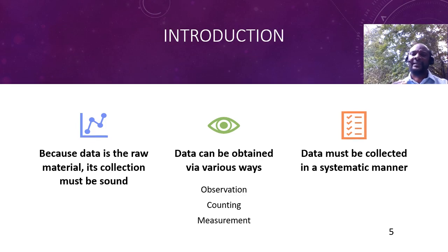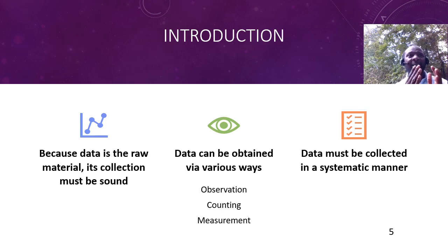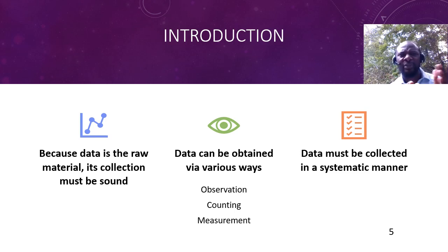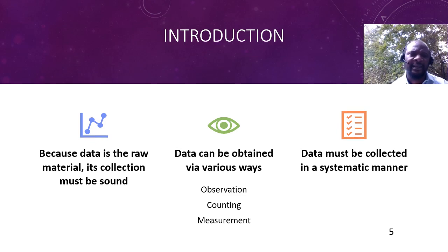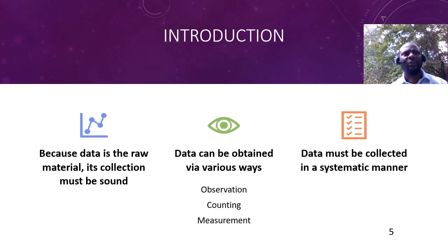Because this data will be used for decision making, we expect it to be collected in a systematic fashion — in a way that is reproducible. Other people using the same method of collection should be able to get the same or similar results from the same kind of individuals. That concludes the introduction: data is the raw material, it is useful for making decisions, and we can collect it by observing, counting, or measuring — but we must do this systematically.